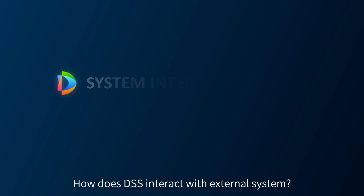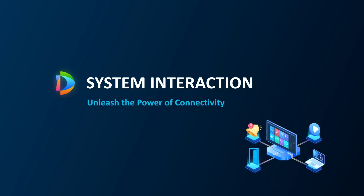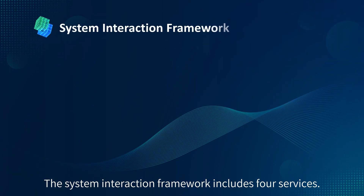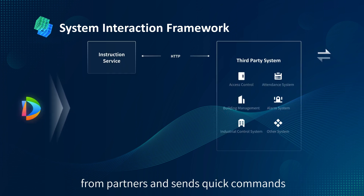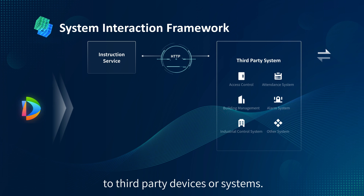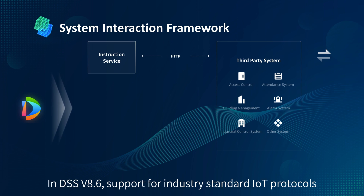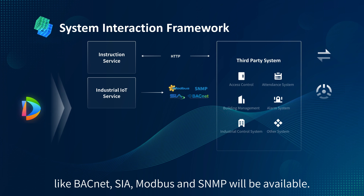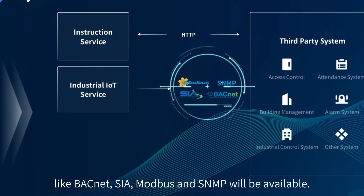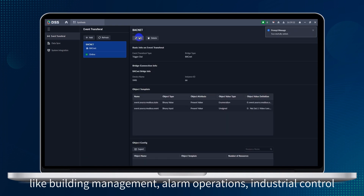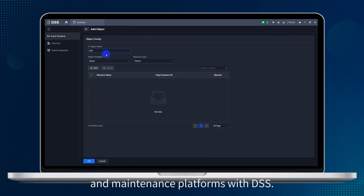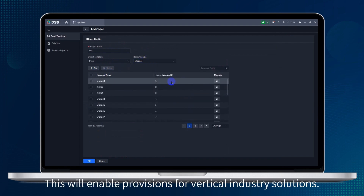How does DSS interact with external systems? The system interaction framework includes four services. In the first one, Instruction Service captures alarm triggers from partners and sends quick commands to third-party devices or systems. In DSS version 8.6, support for industry standard IoT protocols like BACnet, SIA, Modbus, and SNMP will be available. This allows for integration between various systems like building management, alarm operations, industrial control, and maintenance platforms with DSS, enabling provisions for vertical industry solutions.